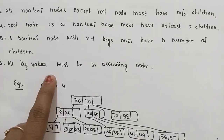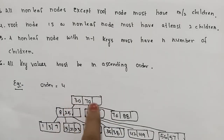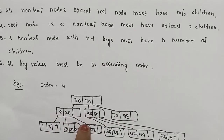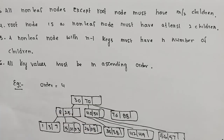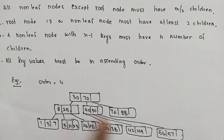All key values must be in ascending order. Each node stores key values in ascending order — for example, 8, 25, 40, 50 in ascending order. These are the B-tree properties. We will discuss the B-tree construction in the next example based on a given order.